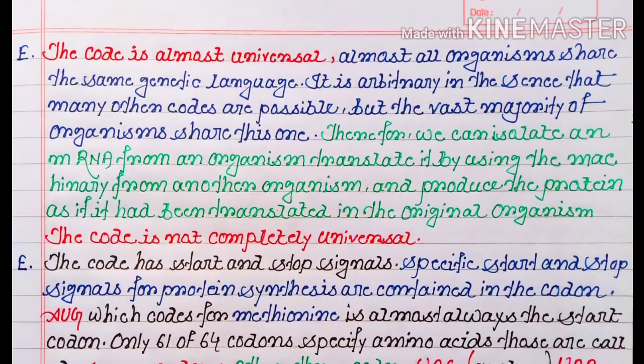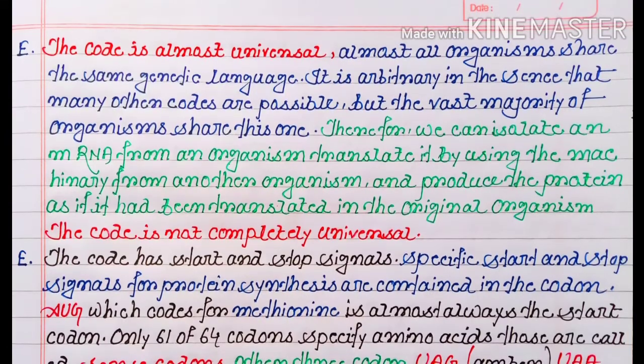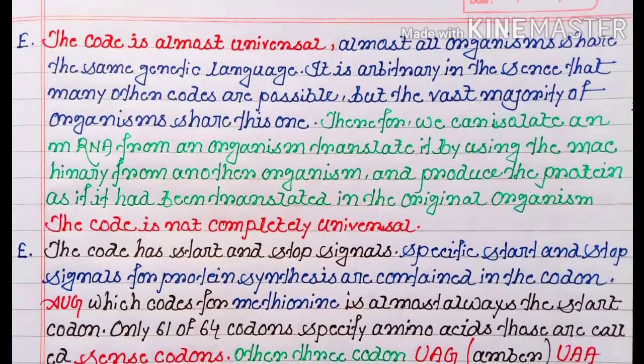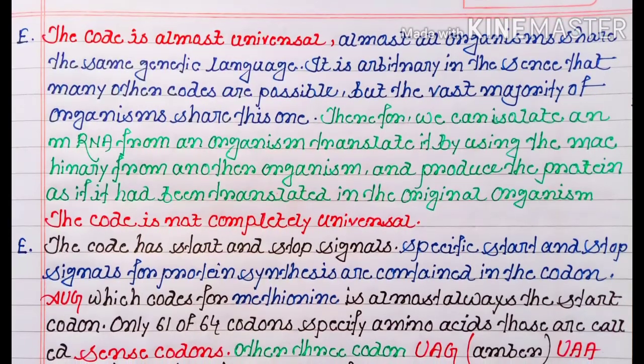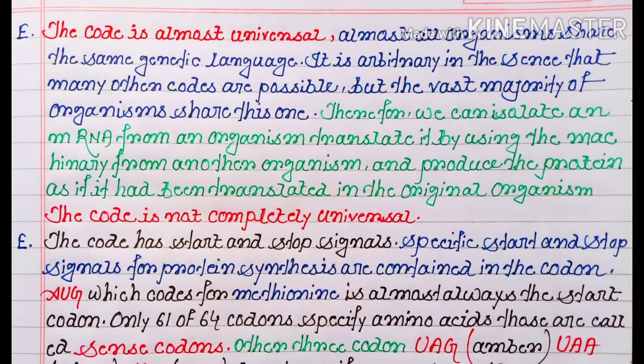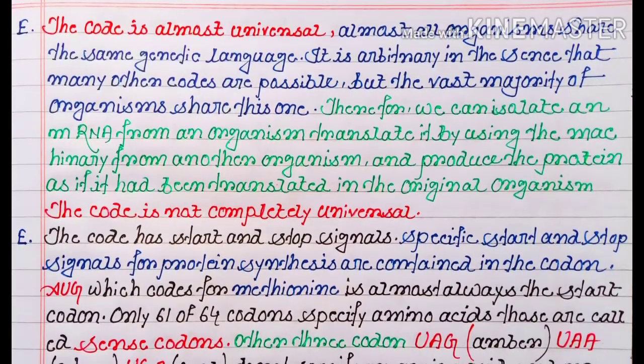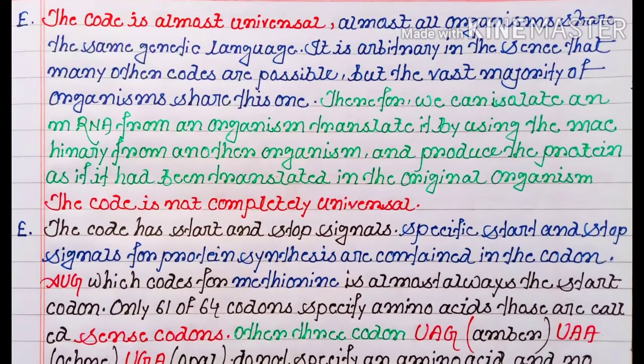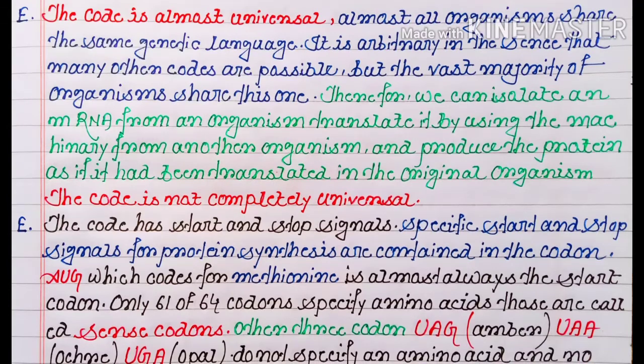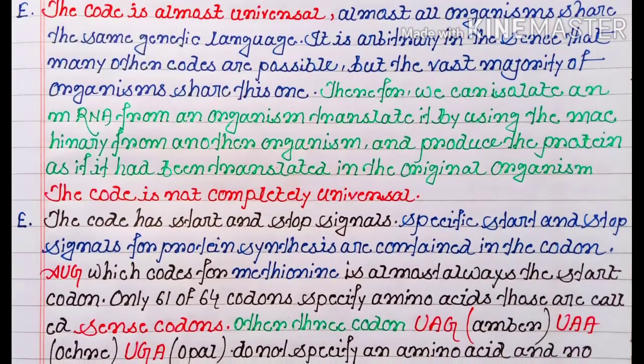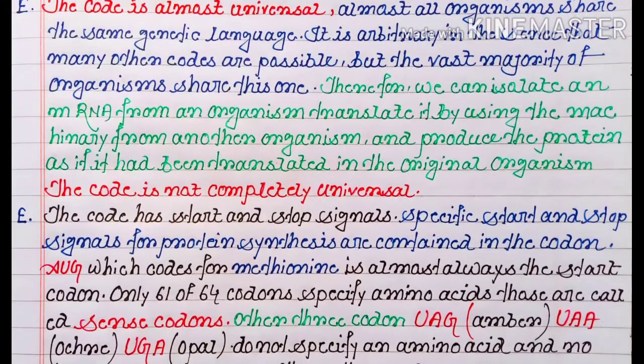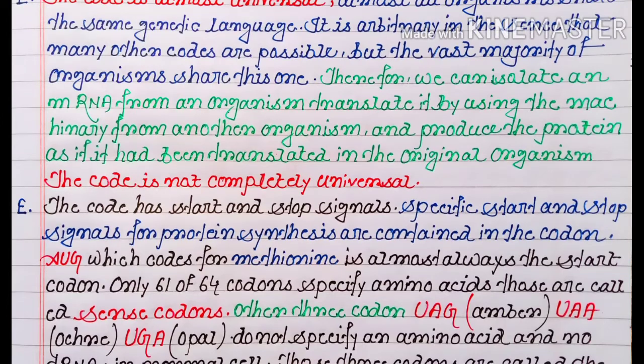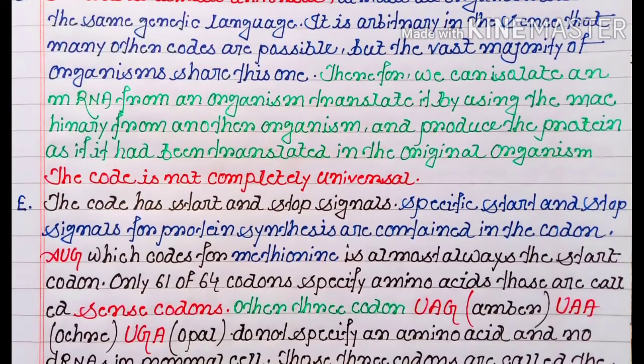Next, the code is almost universal. Almost all organisms share the same genetic language. It is arbitrary in the sense that many other codes are possible, but the vast majority of organisms share this one. Therefore, we can isolate an mRNA from an organism, translate it by using the machinery from another organism, and produce the protein as if it had been translated in the original organism.